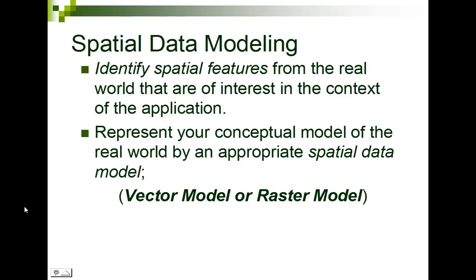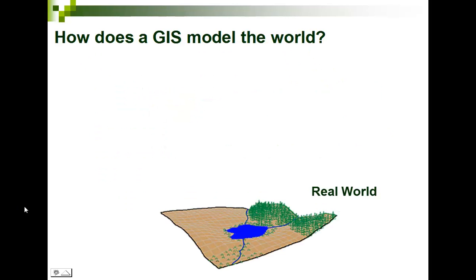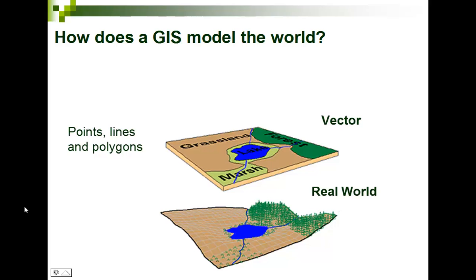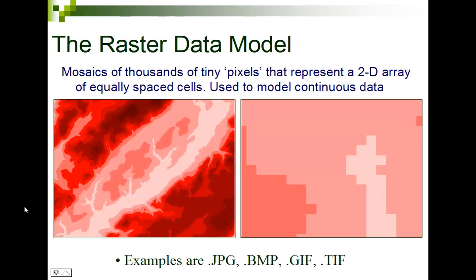In this class, we mainly focus on the vector data model. GIS is an abstraction of the real world. Using the vector data model, we represent things using points, lines, and polygons — you probably remember those from Euclidean geometry in high school. Or we could represent features as cells or pixels in what we call the raster data environment.